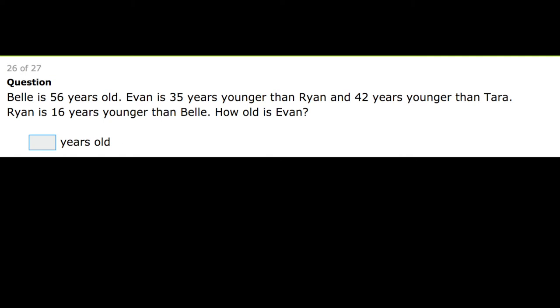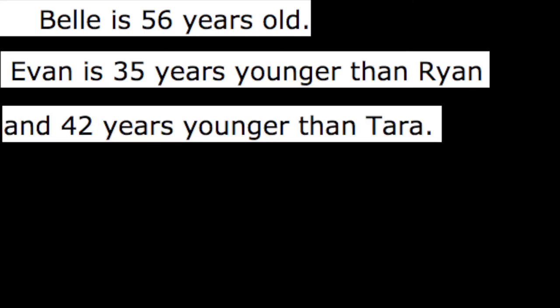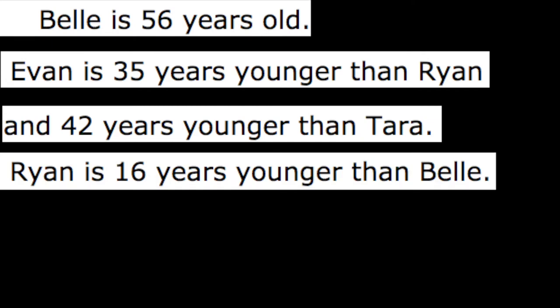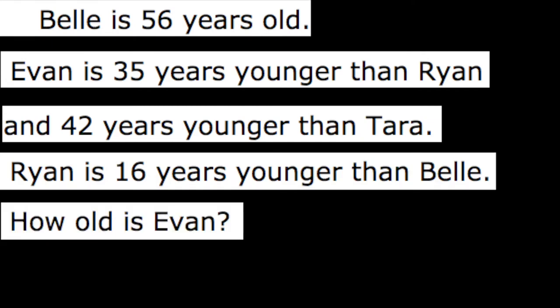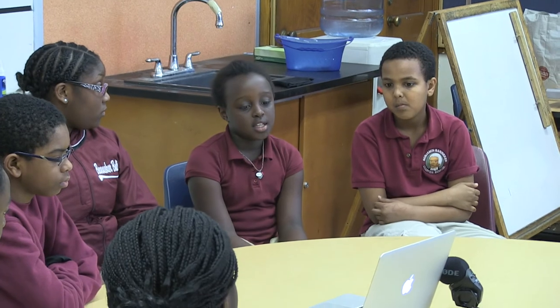You have to read the question carefully to help you understand it. Belle is 56 years old. Evan is 35 years younger than Ryan and 42 years younger than Tara. Brian is 16 years younger than Belle. How old is Evan? First I would find the age that's given to me, and then I would find the clue that shows me what the other person's age is going to be. And so I'll either subtract or add, depending on the clue.